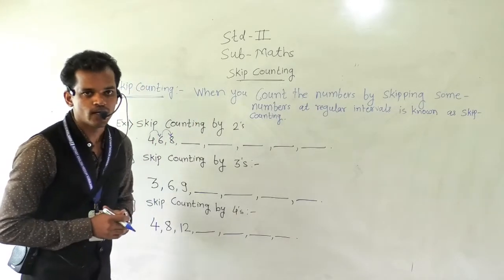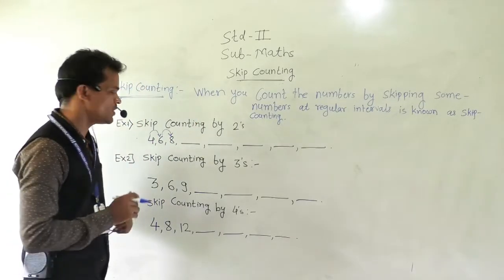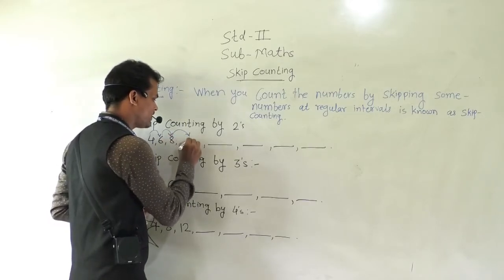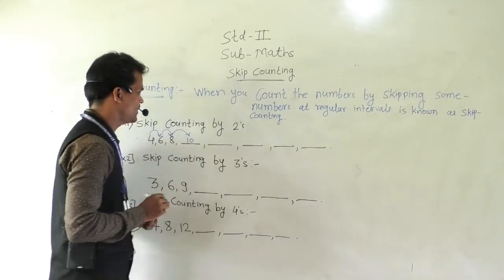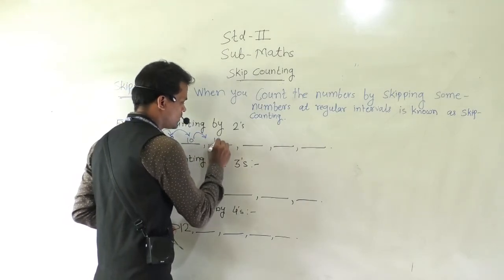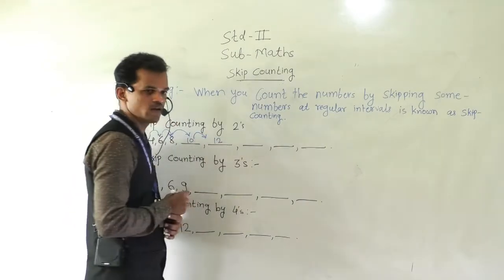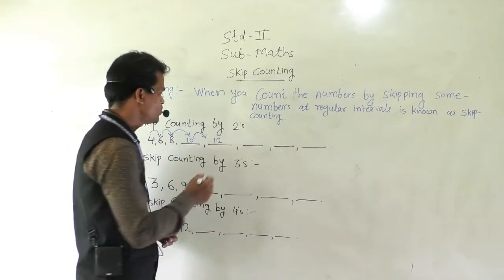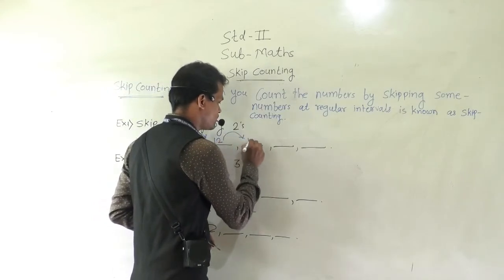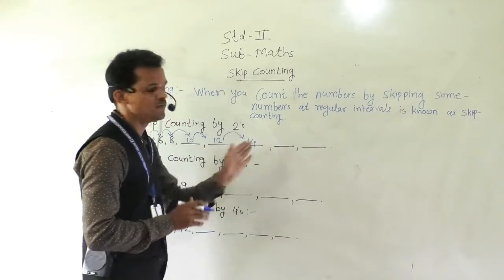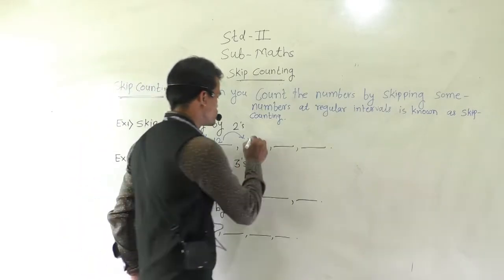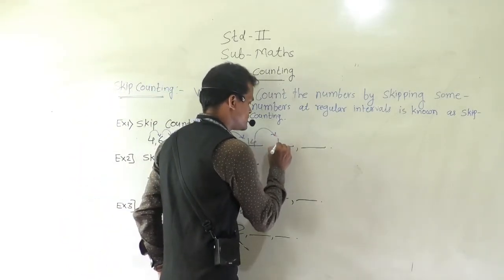Again count forward by 2: 8, 9, and 10. Then again add 2: 11, 12. Again add 2: 13, 14. Then again count forward by 2: 15, 16.